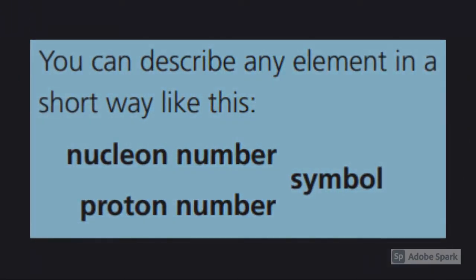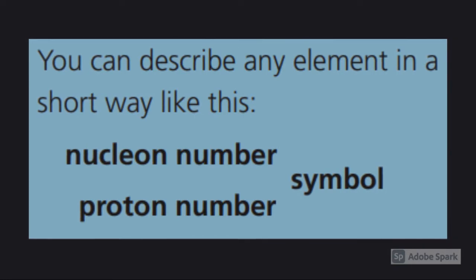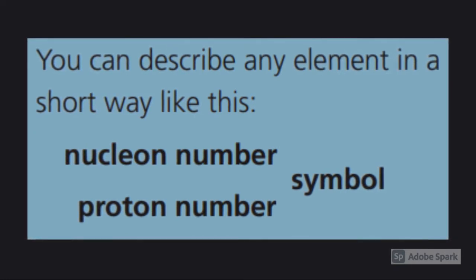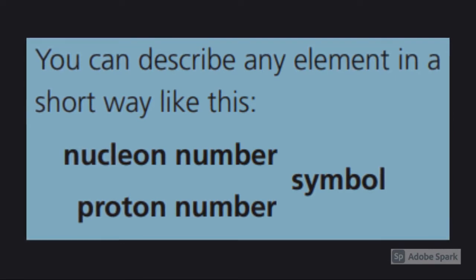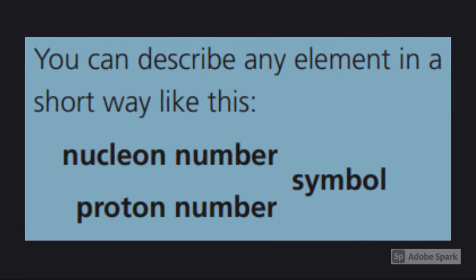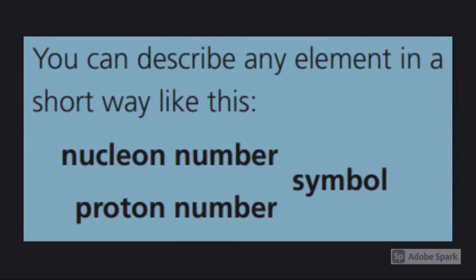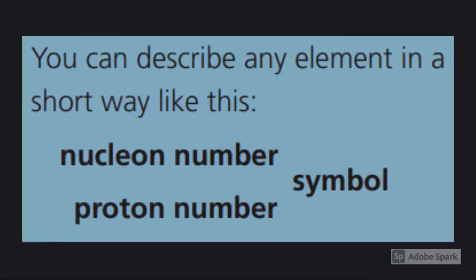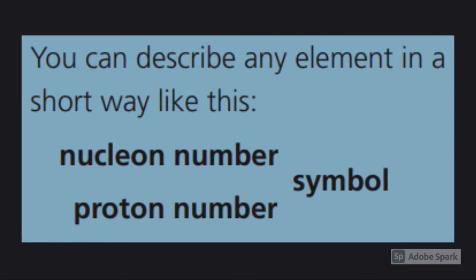In our previous video, we went through how to describe any element in this short way, like you see on the screen. Put the nucleon number at the top left-hand side of the symbol. Put the proton number on the bottom left-hand side of the symbol. Remember, for isotopes, that proton number will be the same. And then just remember to put the symbol correctly. It should be identical to the symbol in the periodic table. In questions, they may give you atoms in this format.